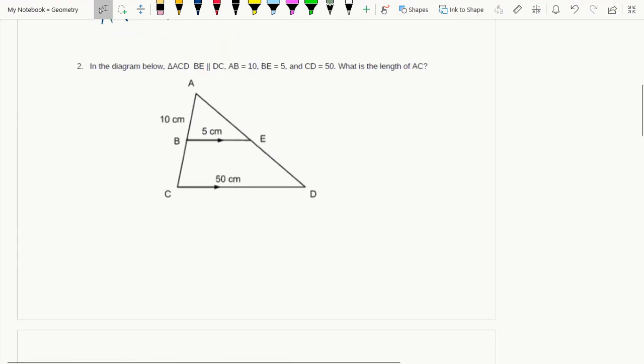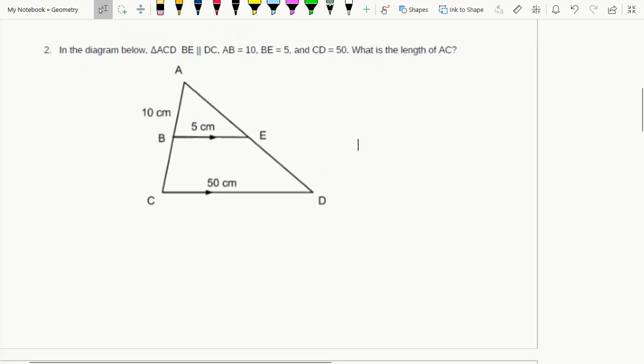All right folks, so here we go with question two on the review. In the diagram below, BE is parallel to DC. Okay, so that's what these little arrows mean - these two lines are parallel.